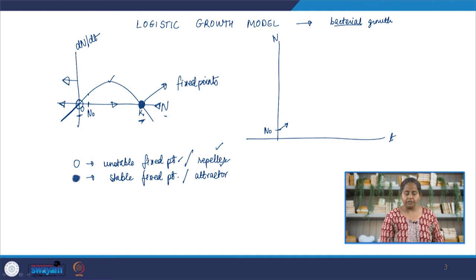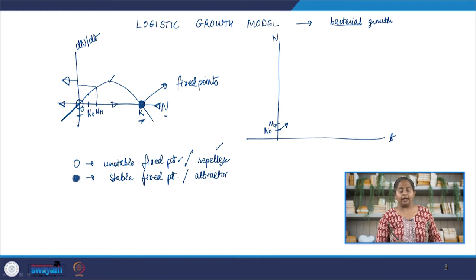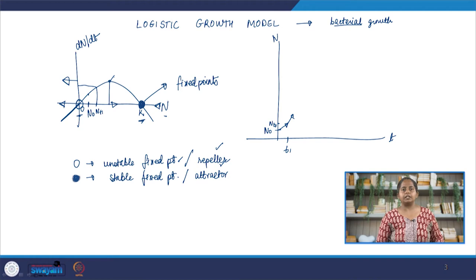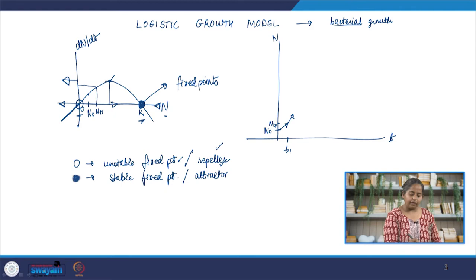Let us start with n₀ very close to the first fixed point 0. At n₀, dn/dt is positive, so n will increase and the slope of the tangent is positive. By the time n increases to a value nt1, dn/dt is now much bigger than at n₀ — so as n is increasing, the rate at which n is increasing also increases: it is accelerating. This continues until n reaches the point where dn/dt is maximum, which is the top of the curve. Note that the qualitative approach cannot tell you exactly when or at what value of n that maximum is reached — you need a quantitative approach for that.